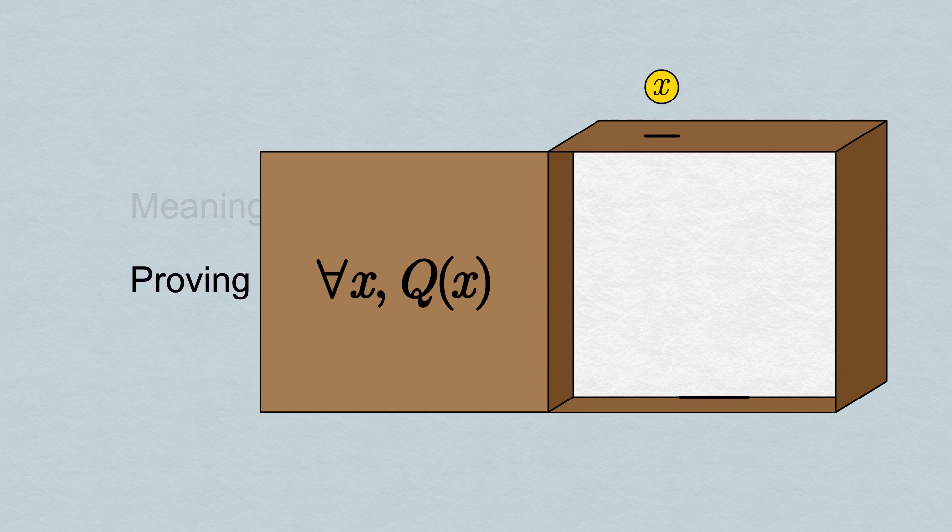First, we need to accept the value x that's given to us, remembering that we, inside the box, don't get to choose it. This is most often said with a particular phrase: let x be given. We must passively accept whatever x is given to us.